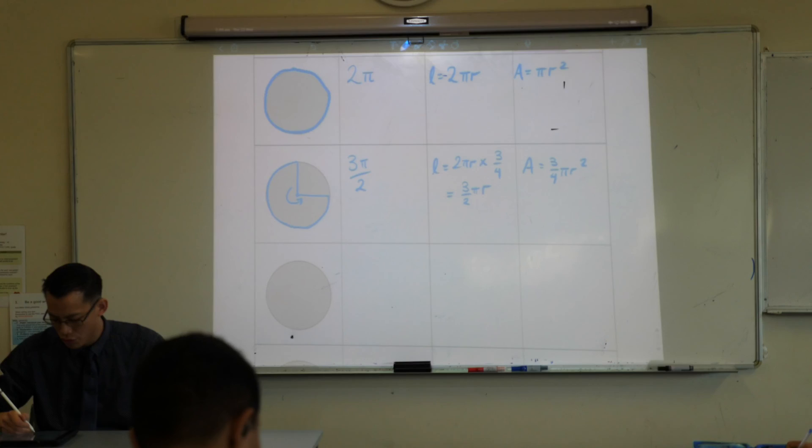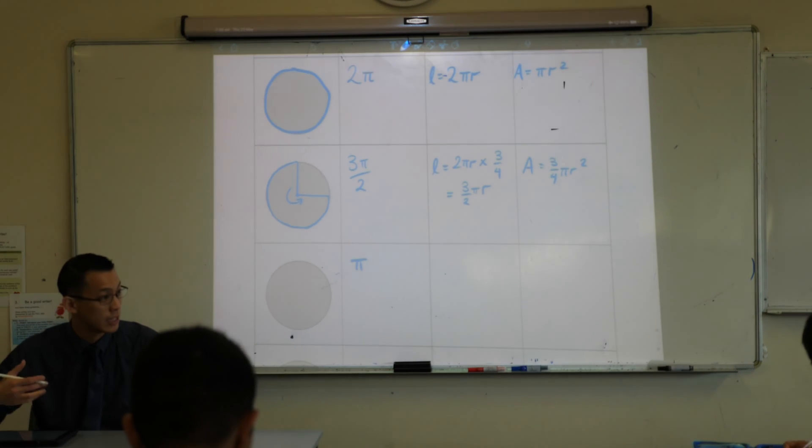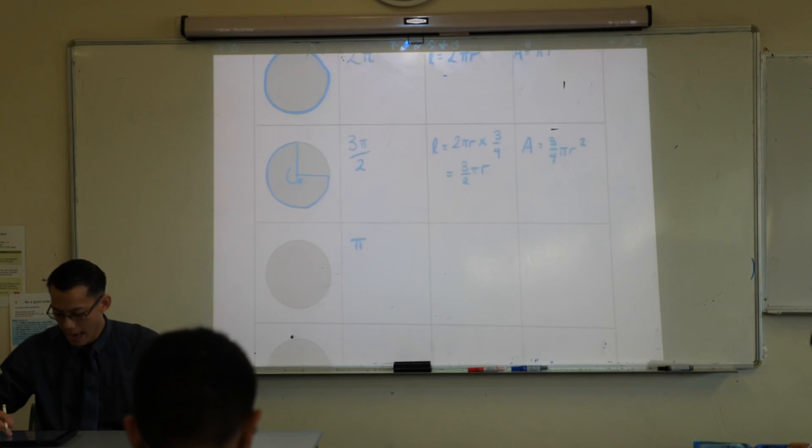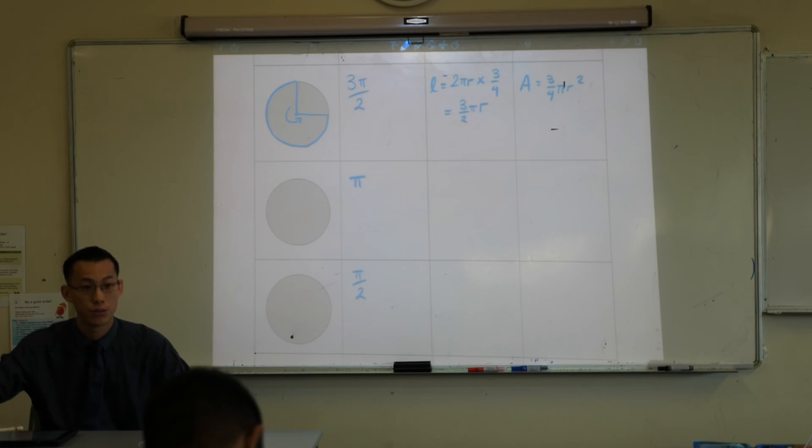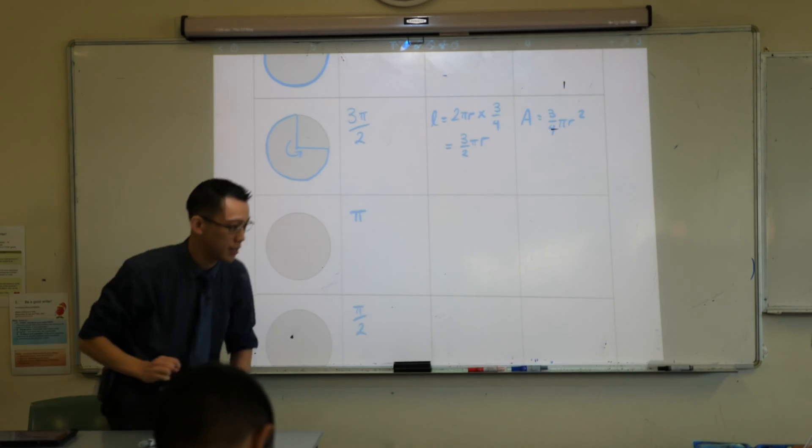Can you, for the next two circles, can you do π radians, get the according arc length and its area, and then for this fourth one, do π/2 for me. Can you do those? I'll give you a minute to catch up.